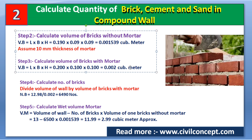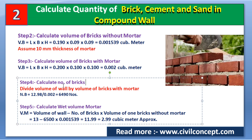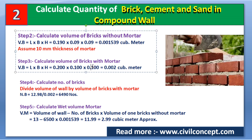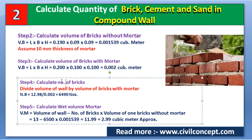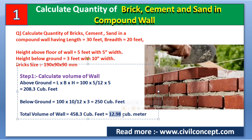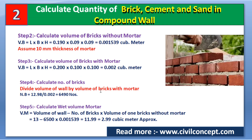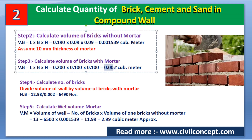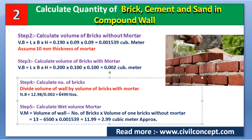In Step 4, we calculate the number of bricks. The formula is: Number of bricks = Volume of wall ÷ Volume of one brick with mortar. Volume of wall = 12.98 cubic meters. Volume of one brick with mortar = 0.002 cubic meters. So total number of bricks = 12.98 / 0.002 = 6490 bricks required to construct this compound wall.